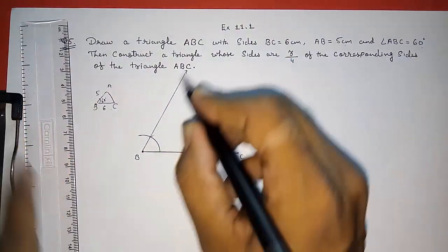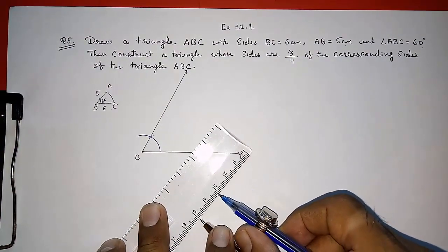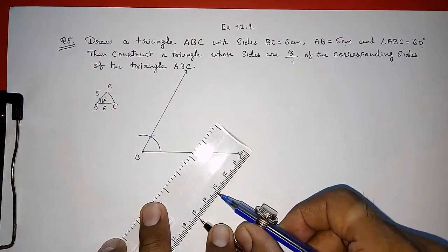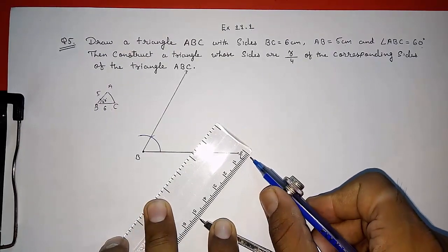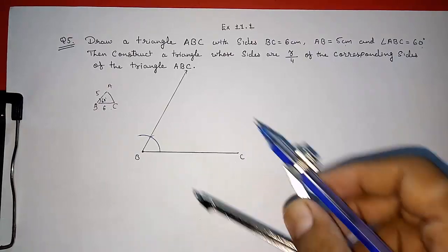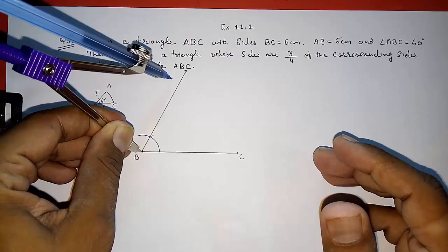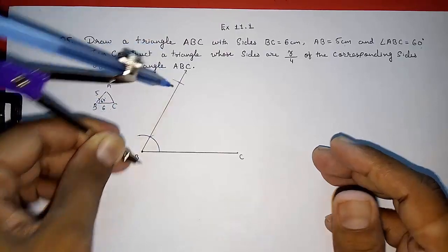Now we know this side is 5 centimeter. So I have to make an arc of 5 centimeter on that. So first I have to take 5 centimeter on around. This is 5 centimeter. Perfect. So I am going to cut an arc of 5 centimeter.